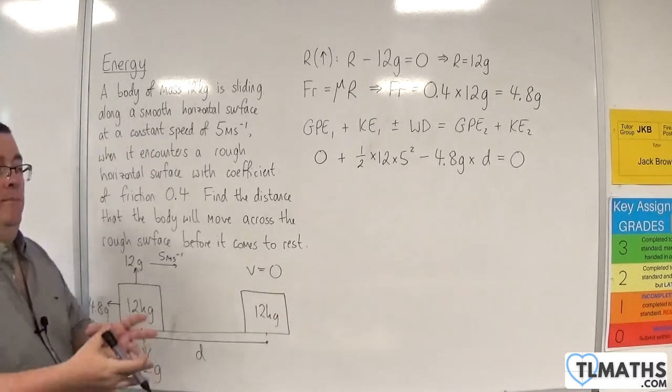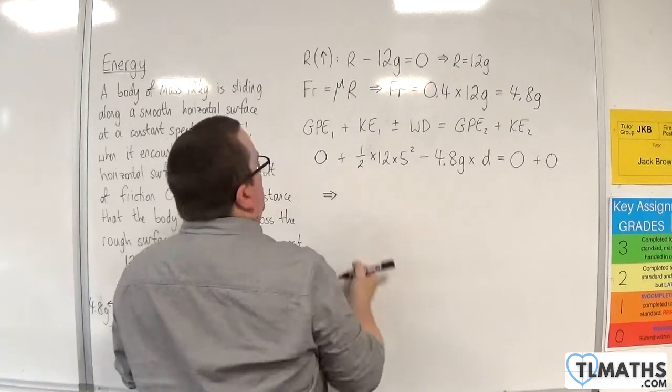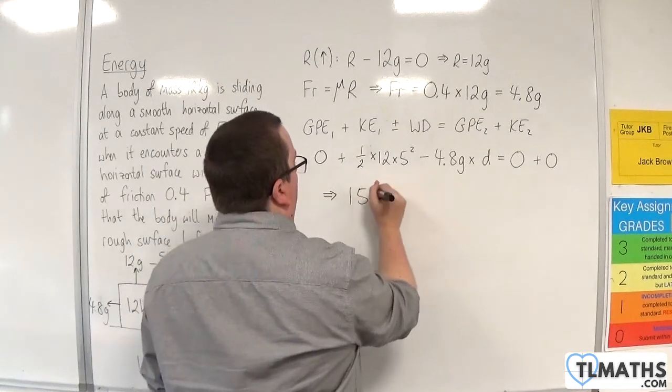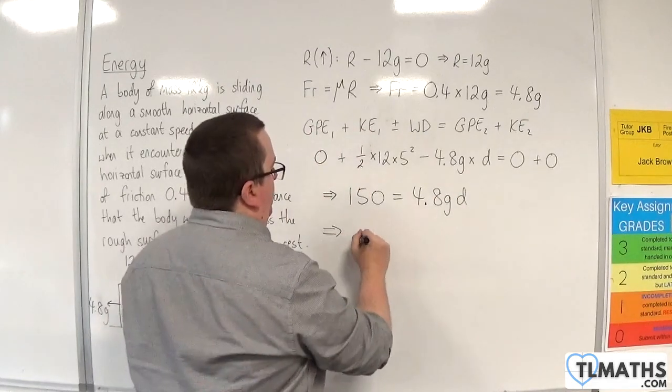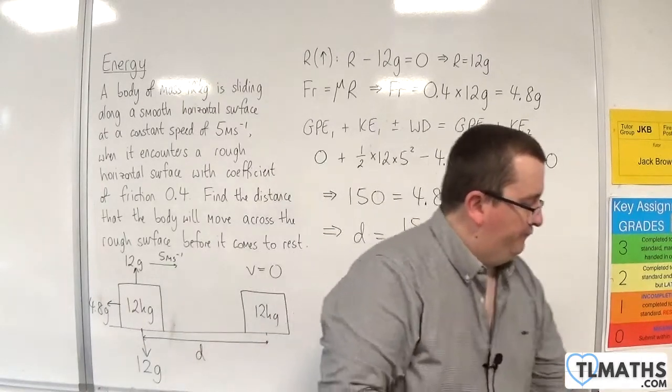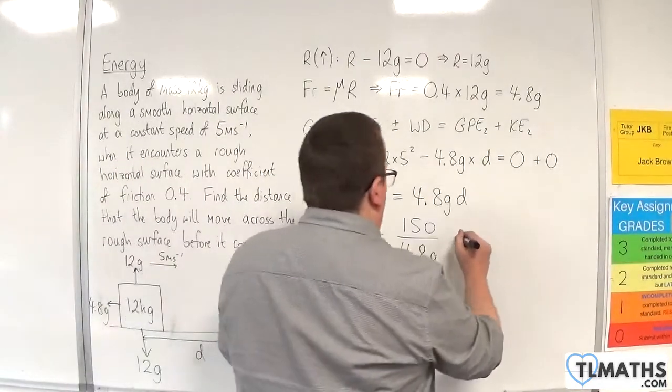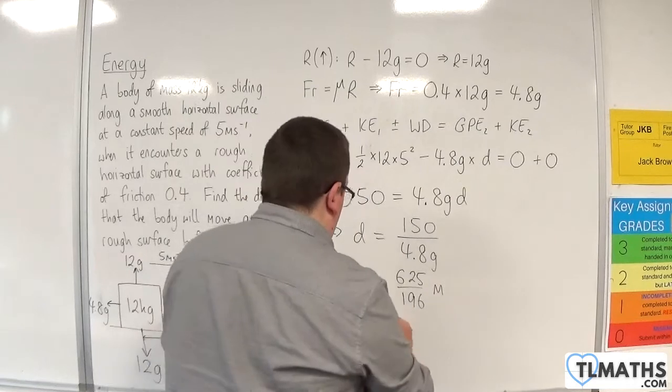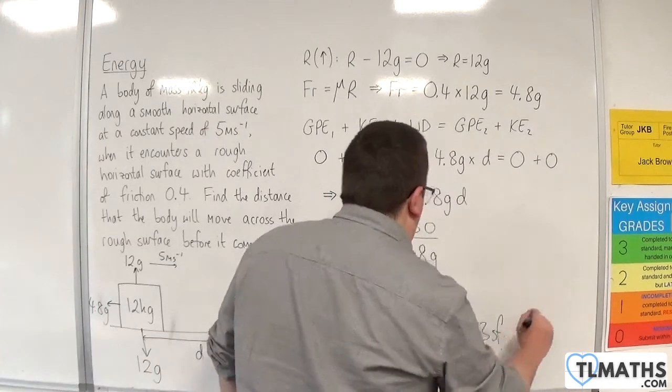We've got 1 half times 12, so 6 times 5 squared, so 6 lots of 25 is 150. That's going to be equal to 4.8g times D. So D will be 150 over 4.8g. 150 over 4.8 times 9.8 is 625 over 196 metres, which is 3.19 metres to 3 significant figures.